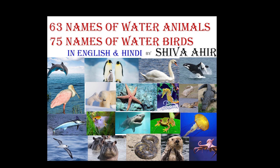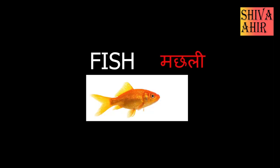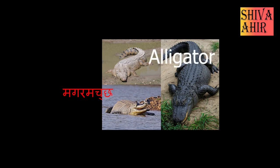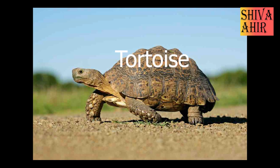Let's start with 63 names of water animals. Fish — Machli. Crocodile — Magarmach. Alligator — Magarmach. Tortoise — Kachua.